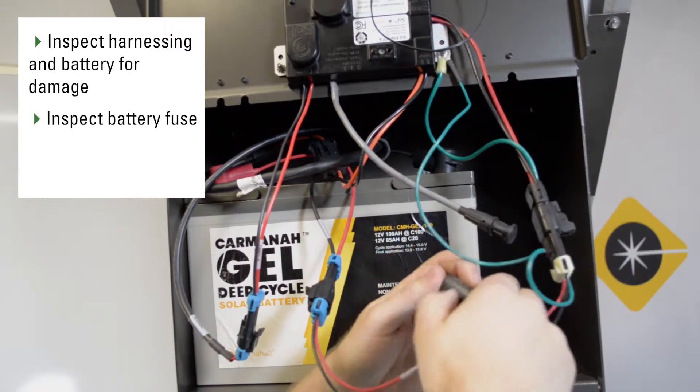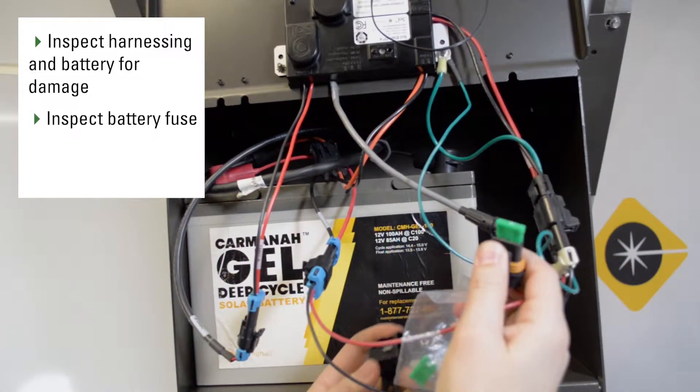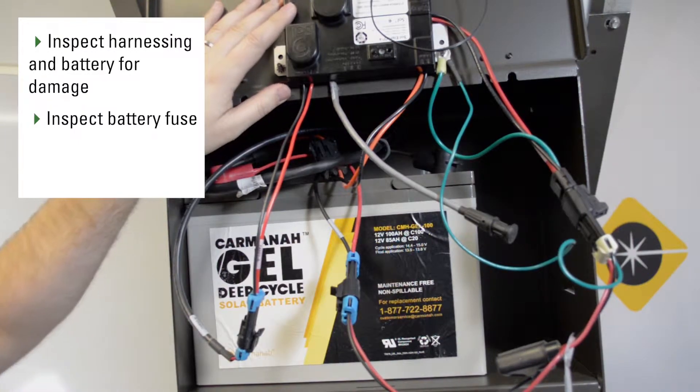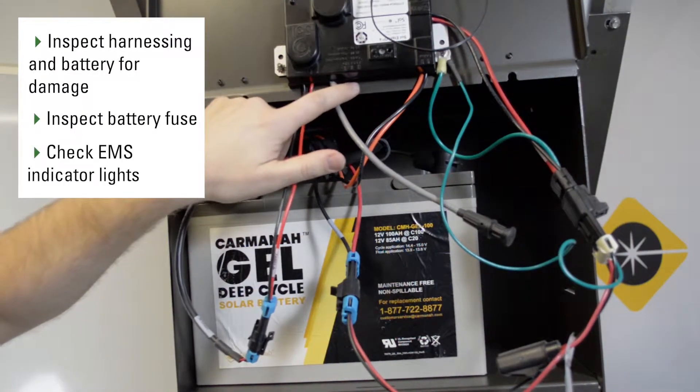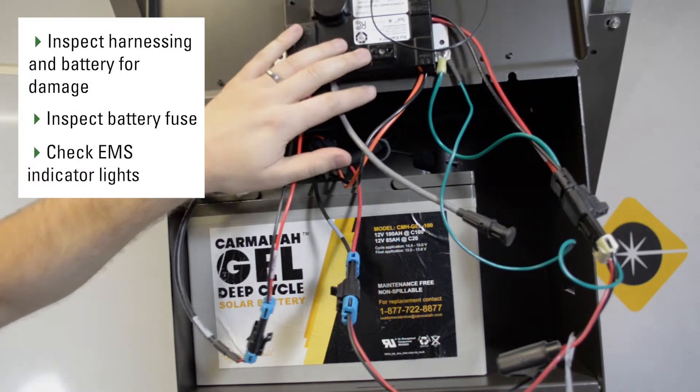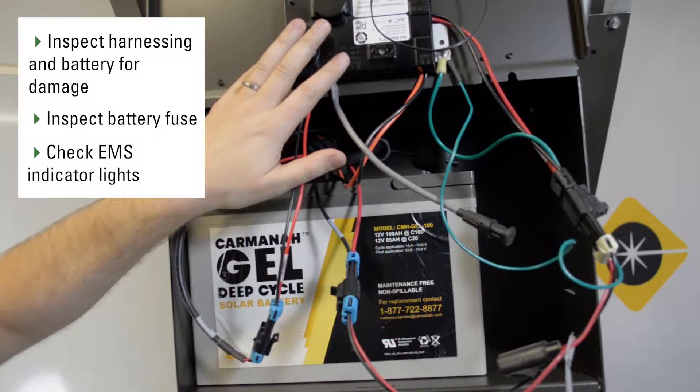Next we want to check the status of the battery fuse which is hidden behind a protective cap. Assuming the fuse is intact, next we want to check the indicator lights on the back of the EMS. It was a particularly sunny day.